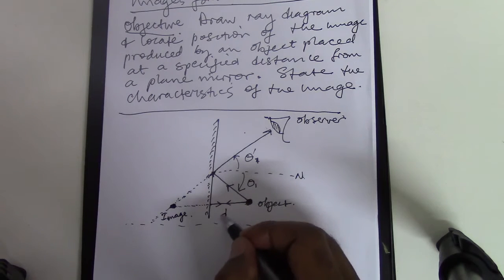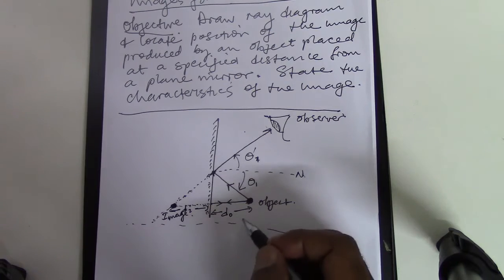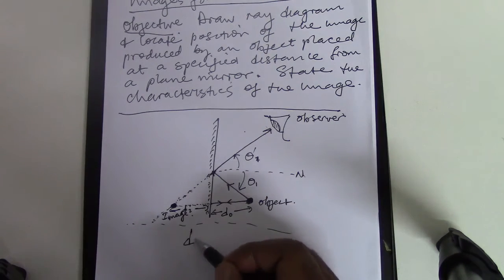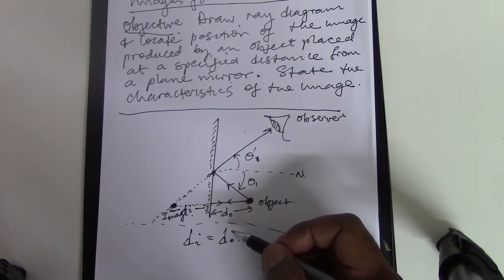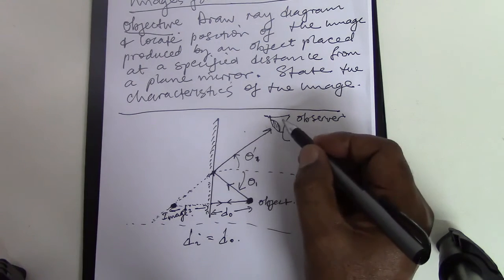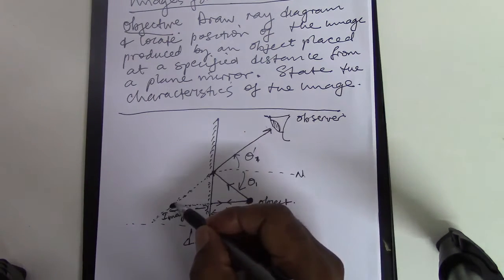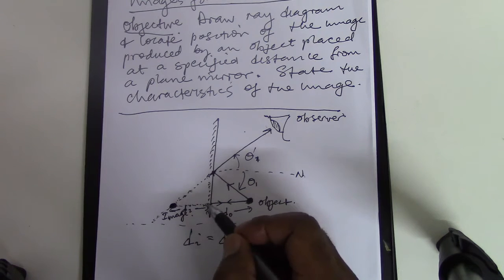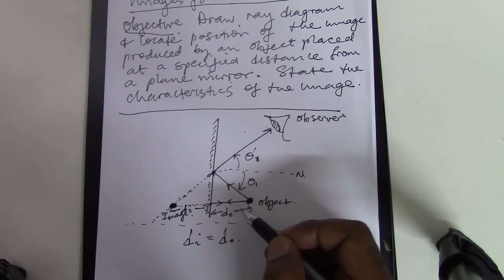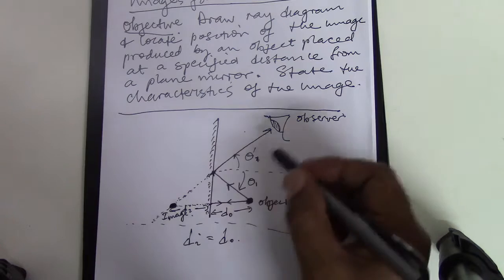Let's call D-naught the object distance from the mirror, and DI the image distance from the mirror. You find that DI is equal to D-naught in magnitude. So what the observer sees is an image behind the mirror at that point — at the same distance from the mirror as the object is in front of it.